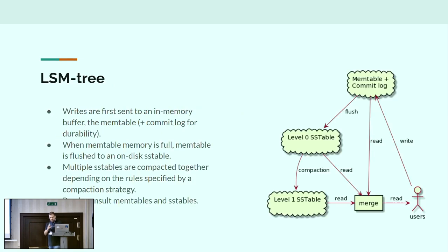What does this mean? We have multiple components called SSTables, and every time we need to read something from the database, we consult all of these components, do a merge, and report the result to the user. Writing data in Cassandra is actually very fast because it only has to go into an in-memory buffer before it's acknowledged as written. From there, because this memtable buffer fills up from time to time, it needs to be sent to disk as an on-disk SSTable.